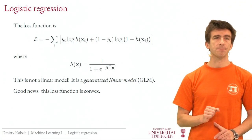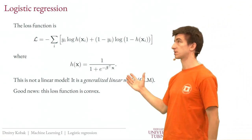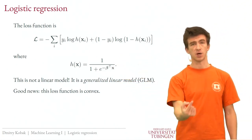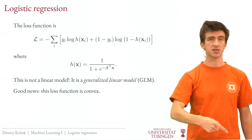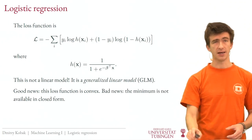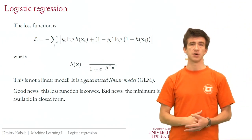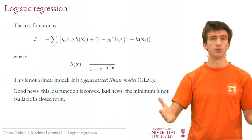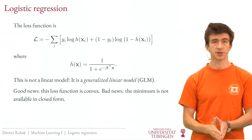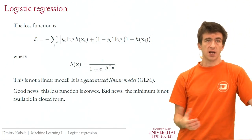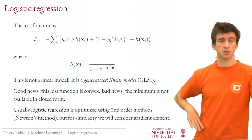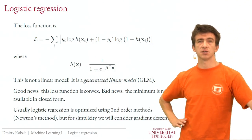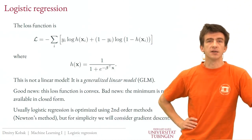Generalized linear model does not mean linear model — remember that. It's still pretty linear in spirit because of the β·x factor, with just a nonlinearity at the end, which is why it's manageable. Good news: this loss function is convex, meaning it has just one minimum. You can start anywhere, do gradient descent, and converge to this minimum. Bad news: there is no closed-form solution for the optimal beta hat vector, unlike linear regression. We have to do optimization — start with some guess and go down the loss surface.